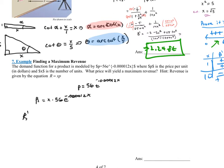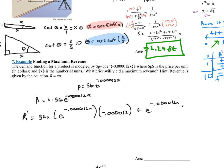Everything's in terms of x, so we need to find the derivative of this using the product rule. It's going to be the first, which is 56x, times the derivative of the second — that's e to the negative 0.00012x times the derivative of the exponent, which is negative 0.00012. Plus the second, which is e to the negative 0.00012x, times the derivative of the first, which is simply 56.